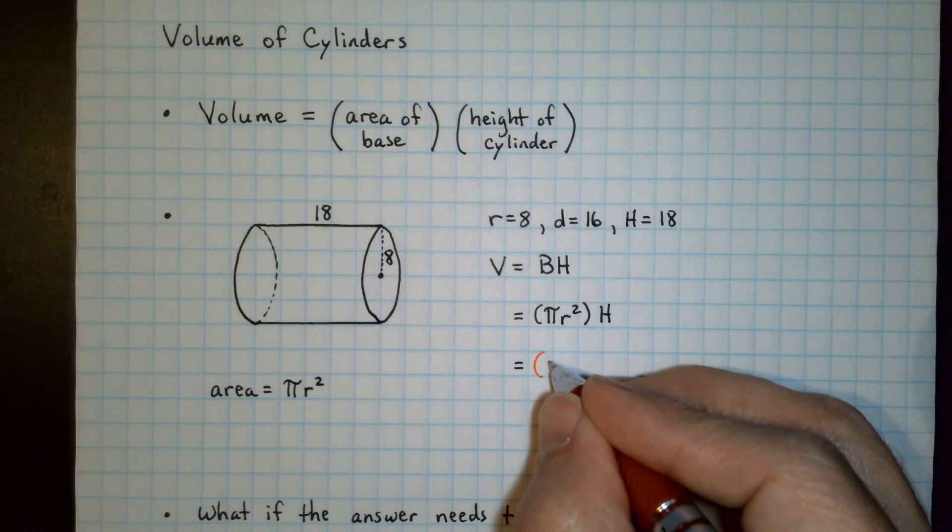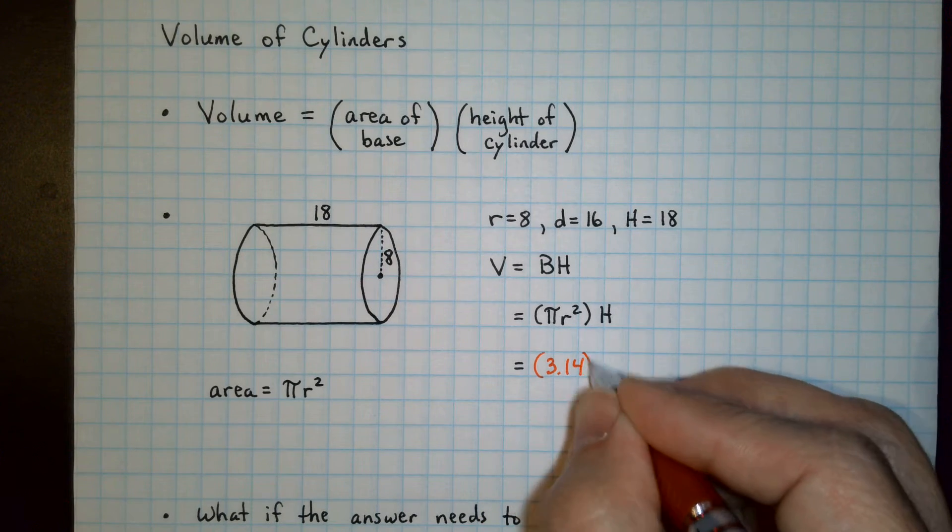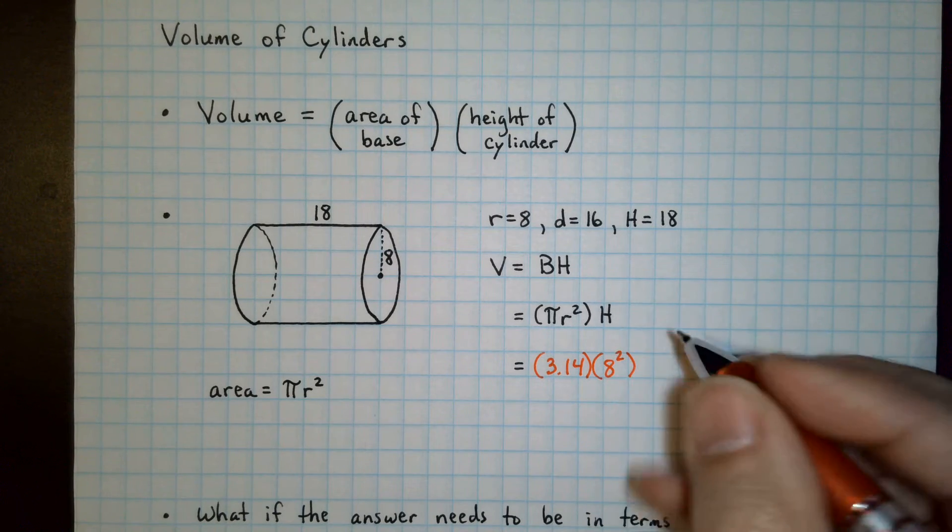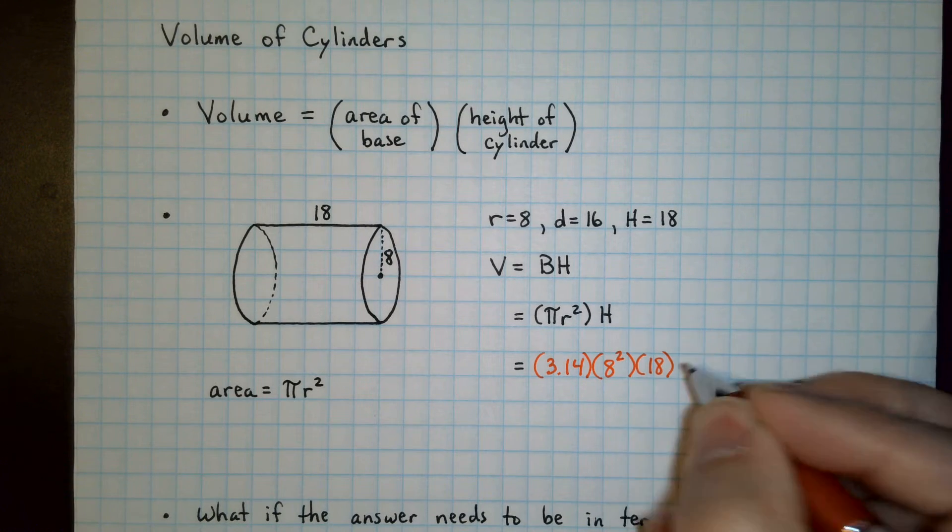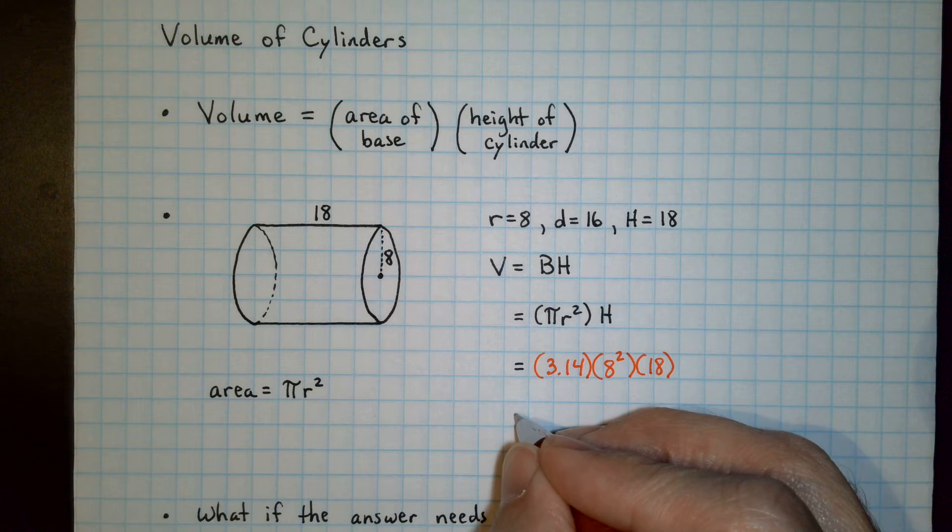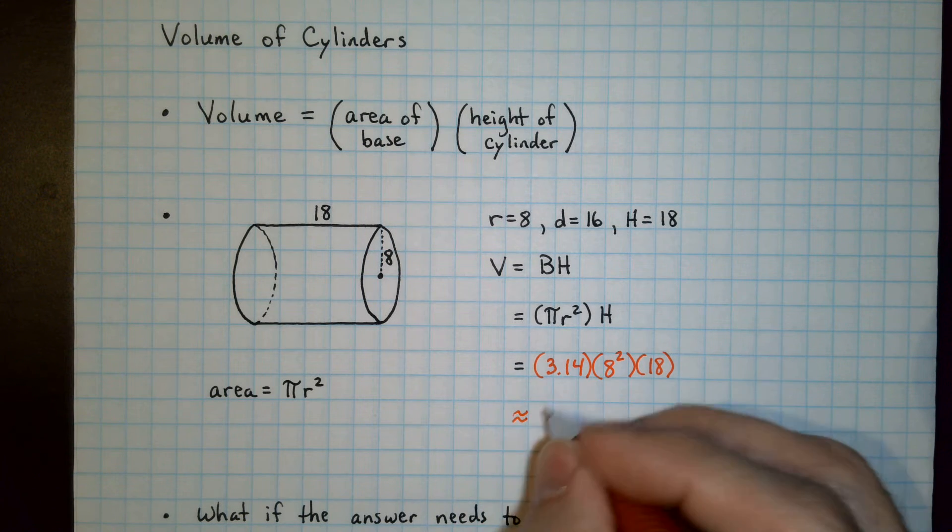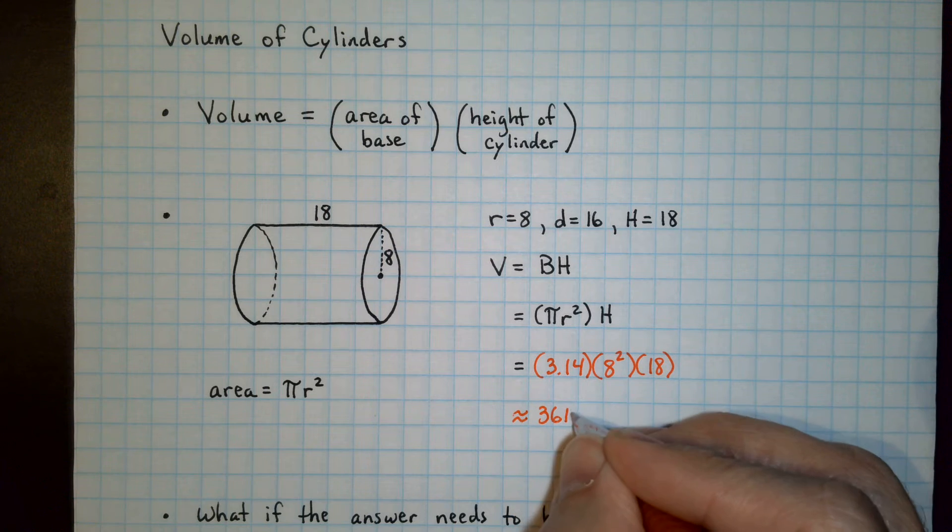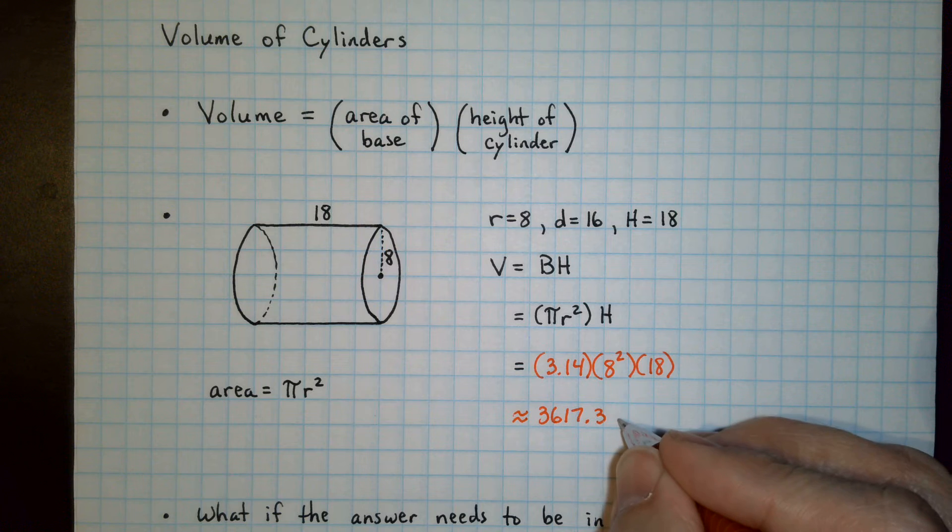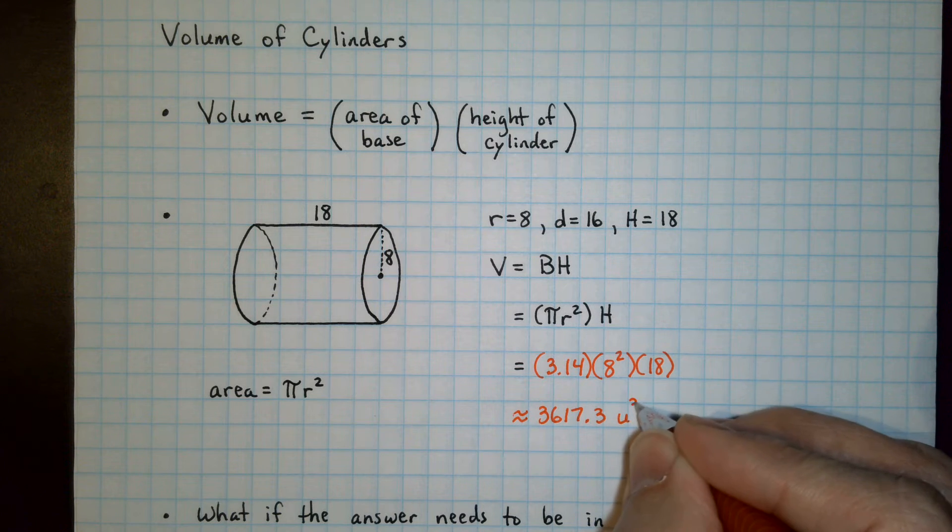So pi, we're going to use 3.14, radius squared becomes 8 squared, and height is 18. Now if I put all that in the calculator and round it to the nearest tenth, I get 3,617.3, and this will be units cubed.